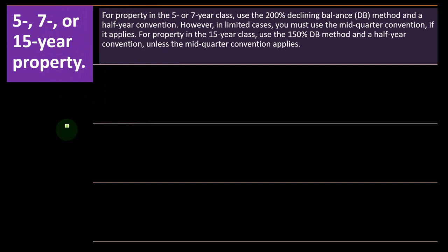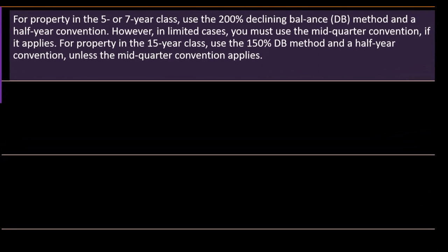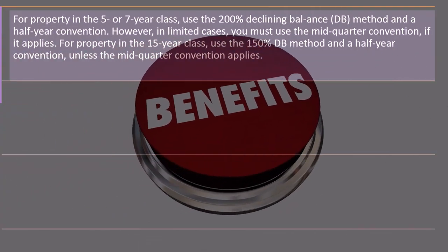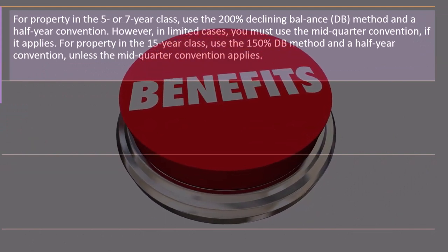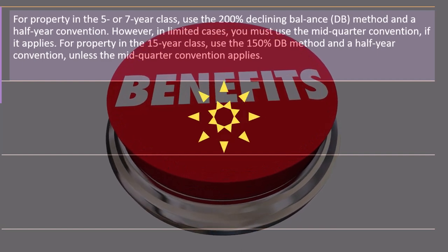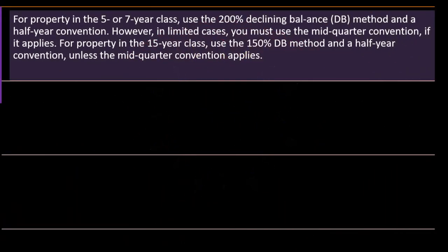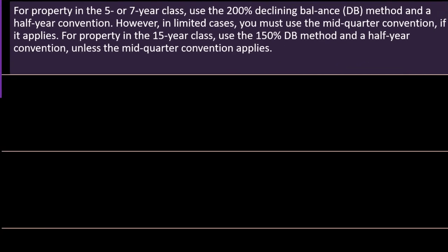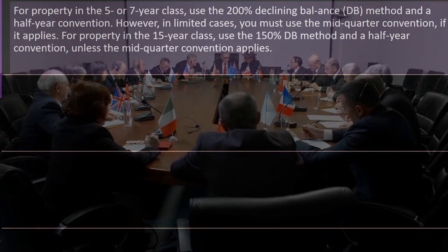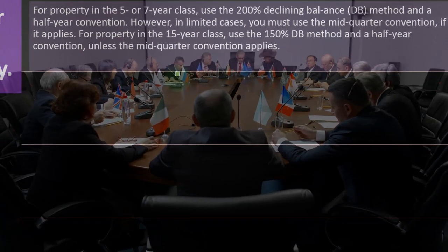For 5-year and 7-year class property, use the 200% declining balance method — that's the accelerated method. It gives a better tax benefit because you get more depreciation upfront. It's also conceptually sound: if you buy a forklift, double-declining is more accurate than straight-line because the forklift is more productive in earlier years — so you should allocate more cost to those years when you get more benefit. That's the double-declining method with a half-year convention.